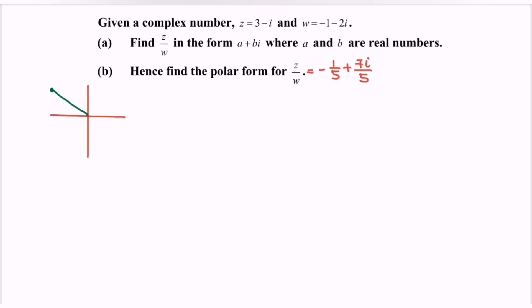Next, find the modulus of z/w: |z/w| = √[(-1/5)² + (7/5)²] = √(1/25 + 49/25) = √(50/25) = √2.